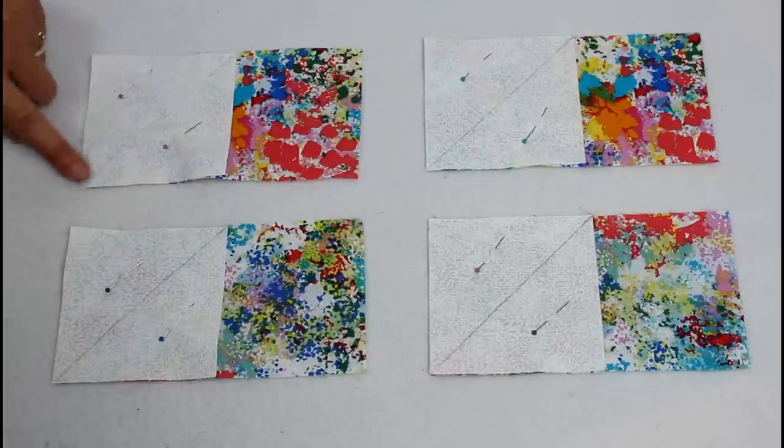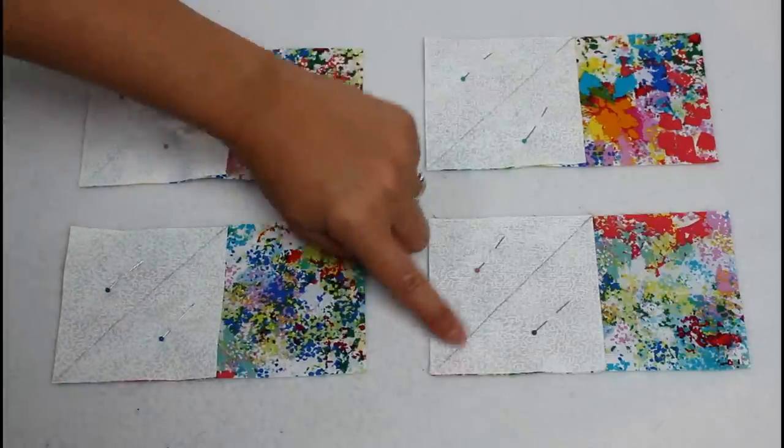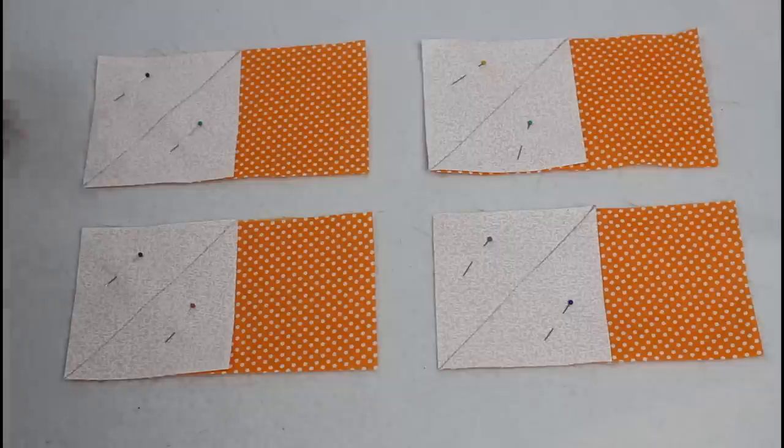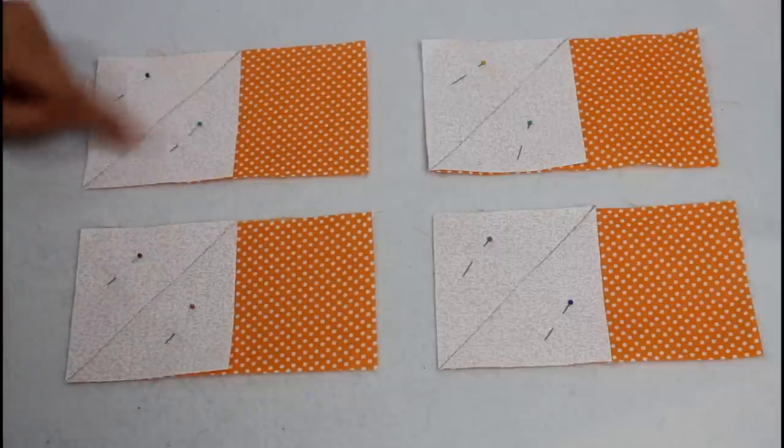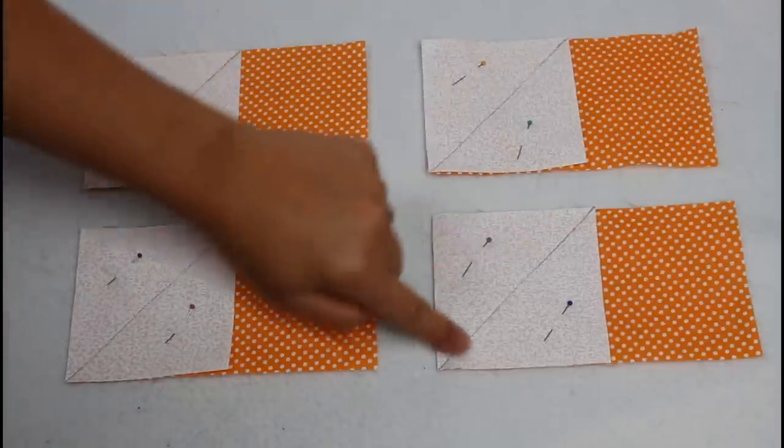Add a couple of pins to each piece and sew directly on the marked line on each set. Repeat until all 8 rectangles are sewn this way.